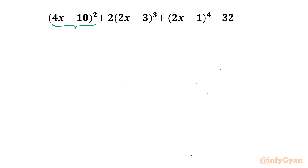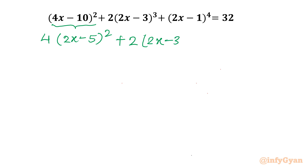You can see the first term has 4 and 10, so 2 is common. Once I take 2 common it will come as 2 squared. So I will write: 4(2x - 5)² + 2(2x - 3)³ + (2x - 1)⁴ = 32.